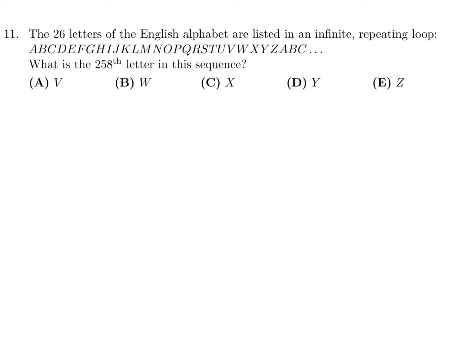Every 26 letters, this whole loop will repeat itself, all the way to Z. So for the 258th letter, we have to divide that by 26. And when we do, we get 9 with a remainder of 24.